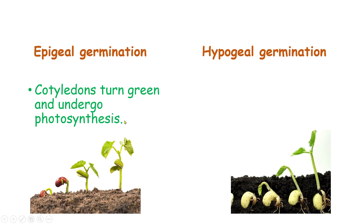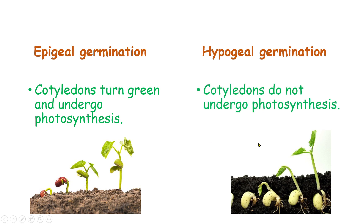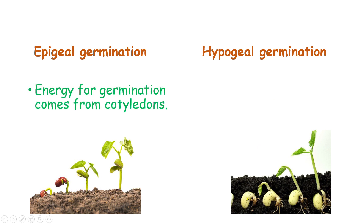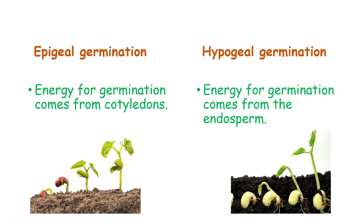In epigeal germination, the cotyledons turn green and undergo photosynthesis. In hypogeal germination, the cotyledons do not undergo photosynthesis and are not green in color. The energy for germination in epigeal germination comes from the cotyledons since they perform photosynthesis. In hypogeal germination, the energy for germination comes from the endosperm — the reserved food of the seed.